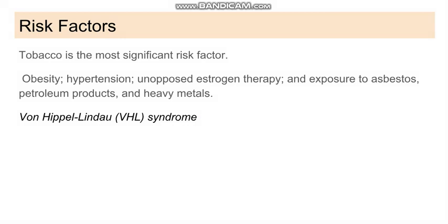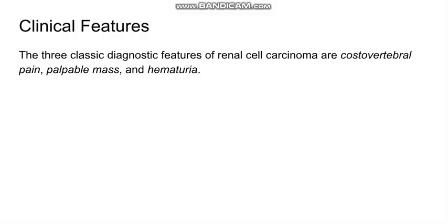Now going to the clinical features. There are three classical diagnostic features of RCC: one is the costo-vertebral pain, second is the palpable mass, and lastly is hematuria. Hematuria is the most important one. This hematuria can be intermittent in nature and can be microscopic in nature.